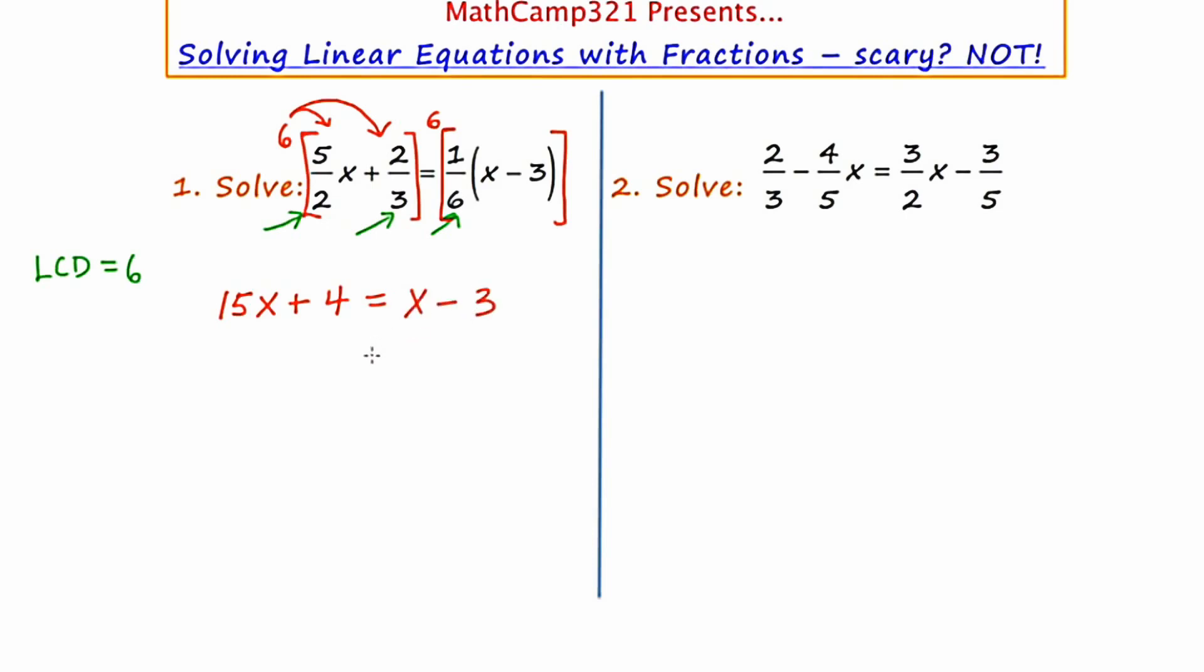Now shifting things around and getting all the x's to one side, I'm going to end up with 14x equals negative seven, and dividing by 14 leaves me with x equals negative seven fourteenths, which reduces of course to negative one half.